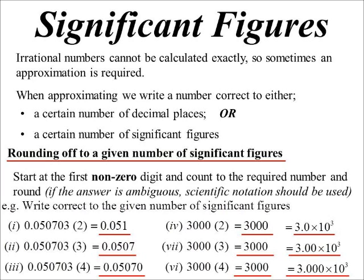So the first one I would write as 3.0 times 10 to the three, then I know two significant figures. Next one, 3.00, three significant figures, and the next one, 3.000. Then I can tell.